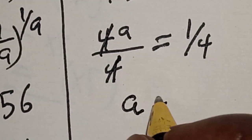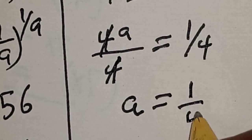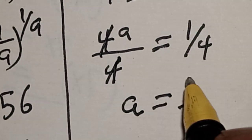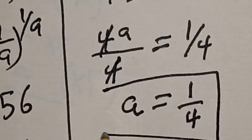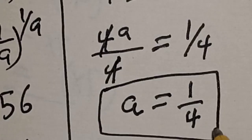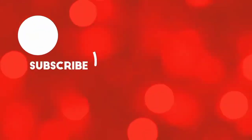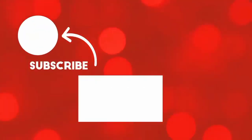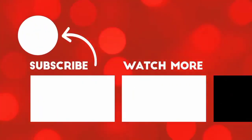Therefore, a is equal to 1 over 4. That is our final answer. If you enjoyed the class, please don't forget to like, share, comment and subscribe. Thank you.